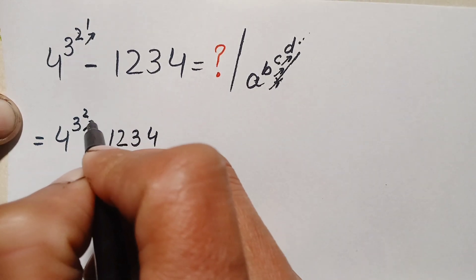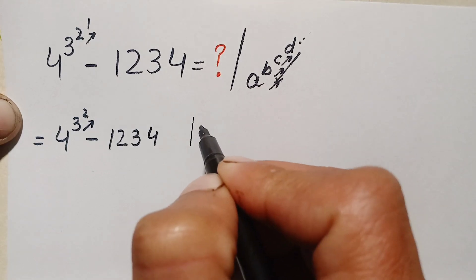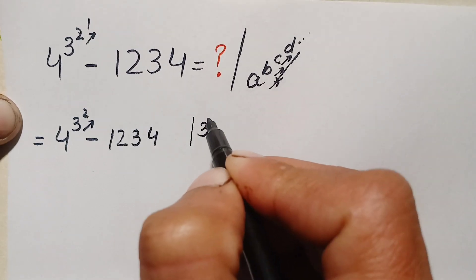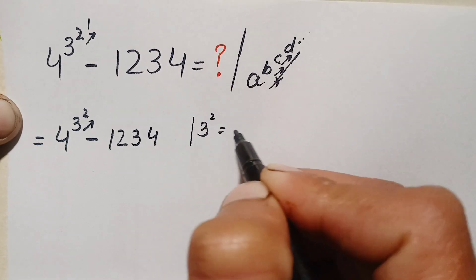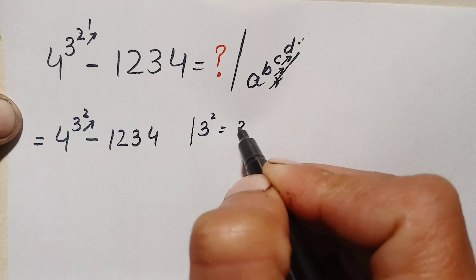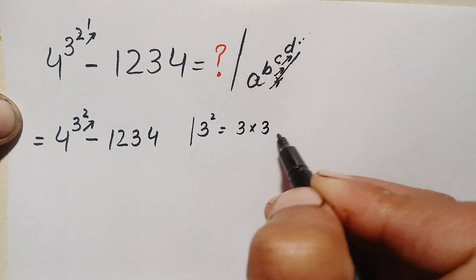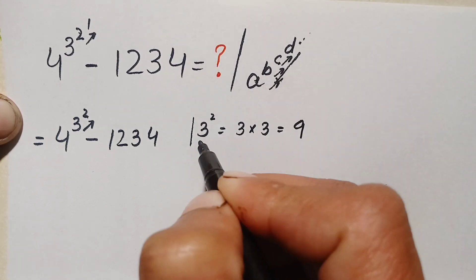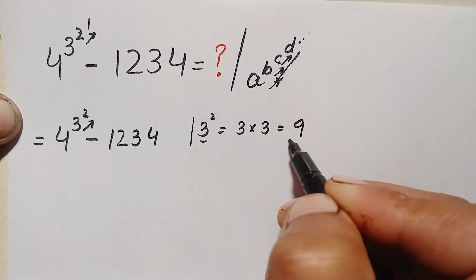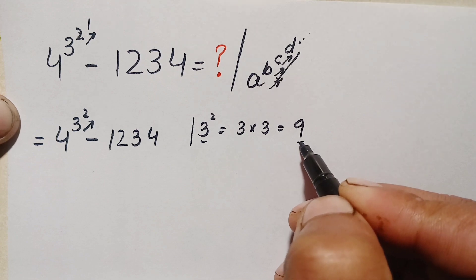Now we try to solve 3 raised to power 2. What is 3 raised to power 2? It means we have to multiply 3 two times, so 3 times 3 is 9. The value of 3 squared, or 3 raised to power 2, is 9.